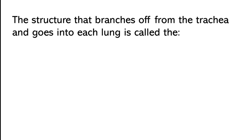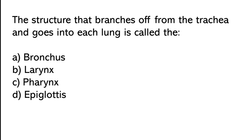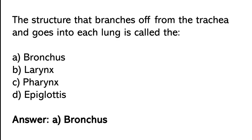The structure that branches off from the trachea and goes into each lung is called — bronchus, larynx, pharynx, epiglottis. The correct answer is option A. The structure that branches off from the trachea and goes into each lung is called the bronchus.